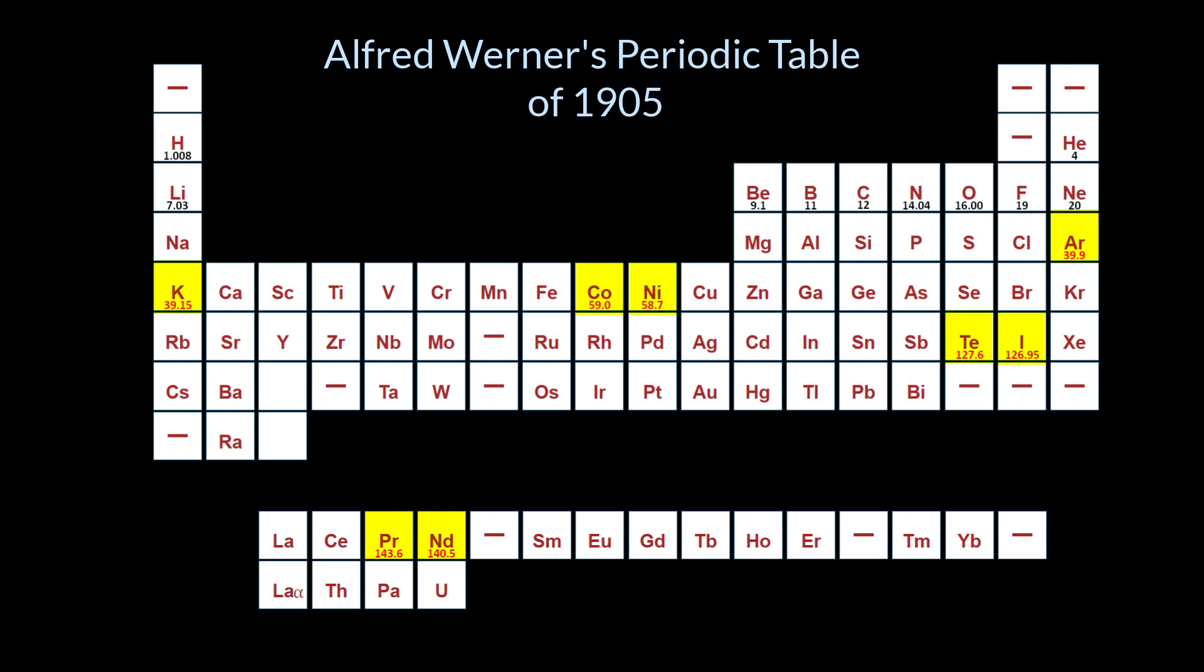Argon potassium, cobalt nickel, tellurium iodine, praseodymium neodymium. The chemical properties of these elements had given them a different place in the periodic table from the one demanded by their atomic weights.